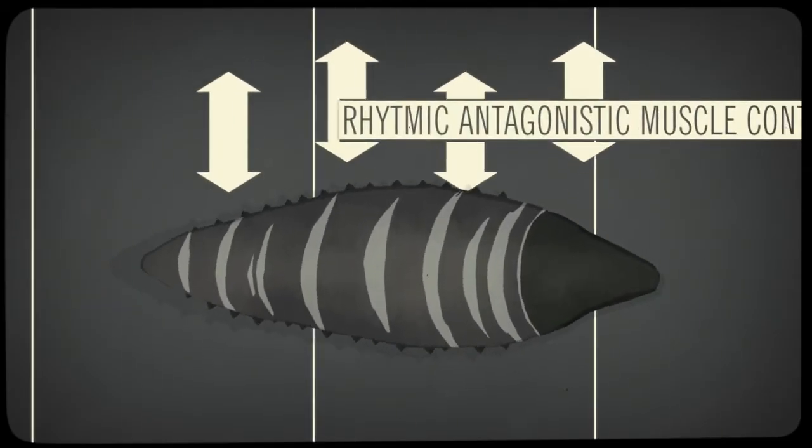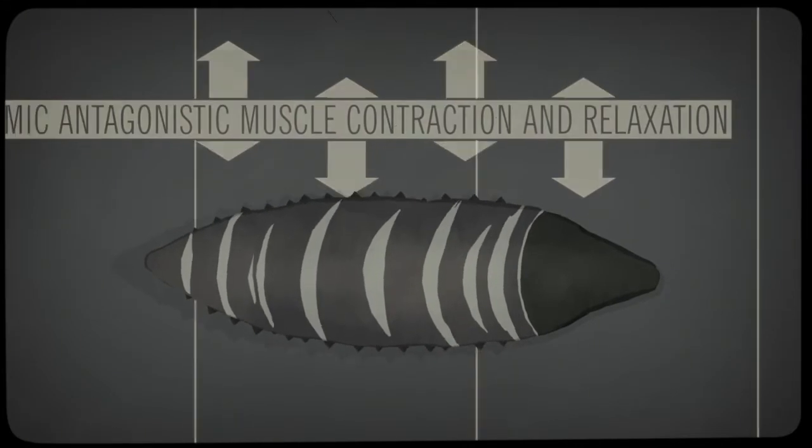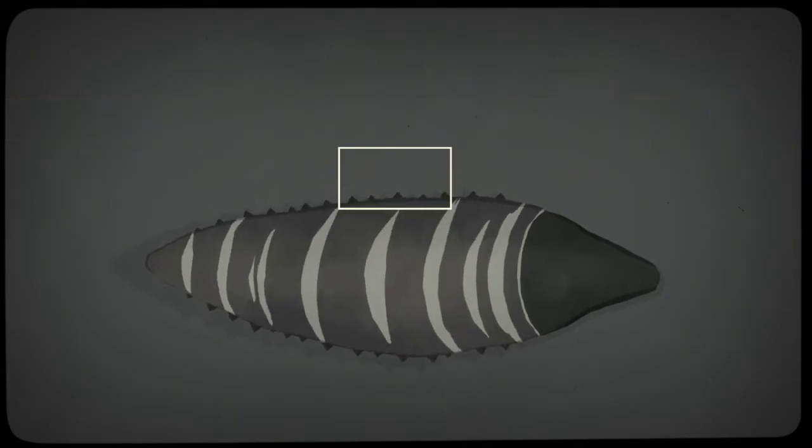By rhythmic, antagonistic muscle contraction and relaxation, they move through the ground. Numerous spikes all over the body assure perfect grip.